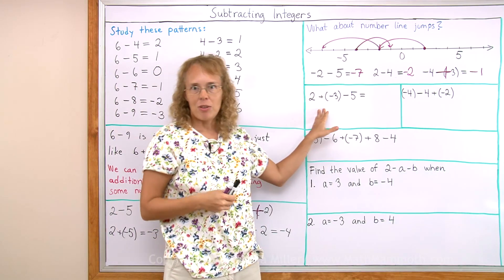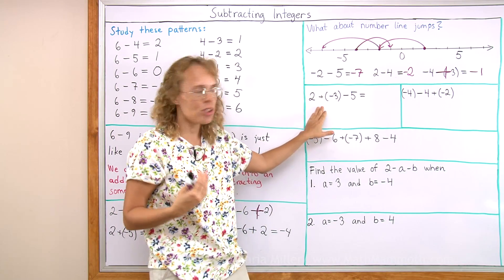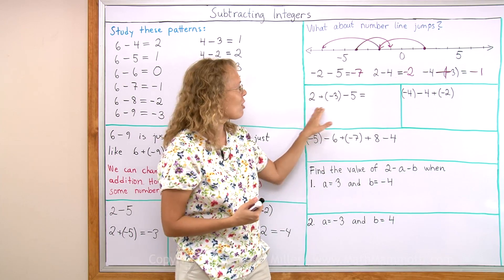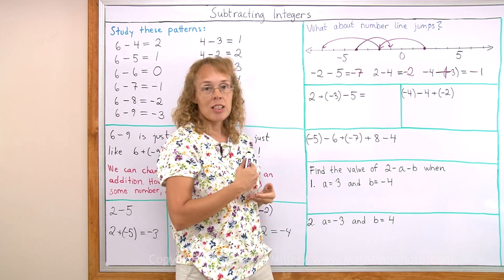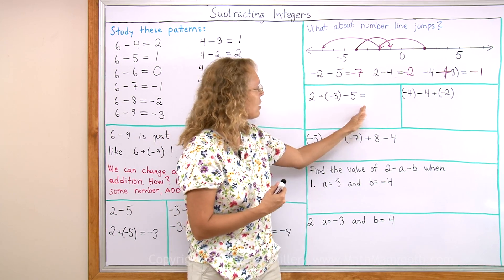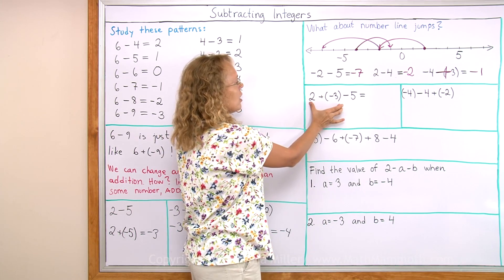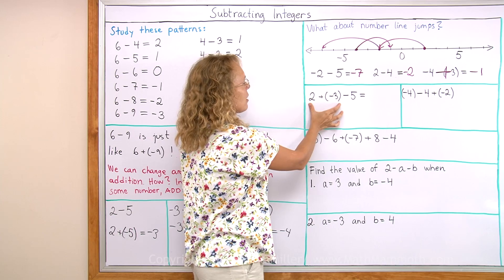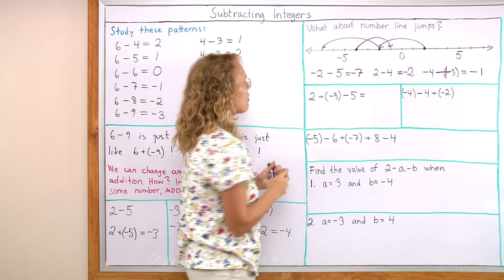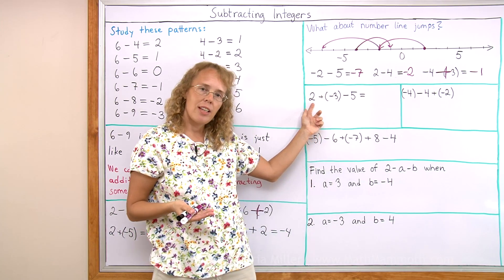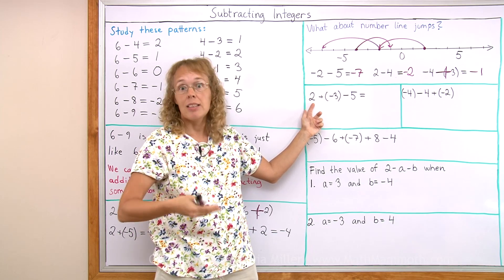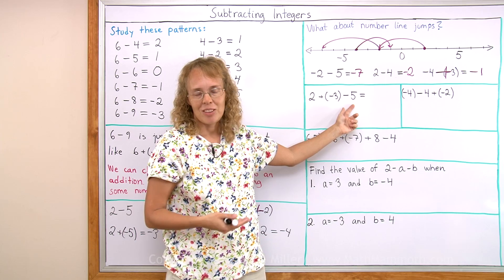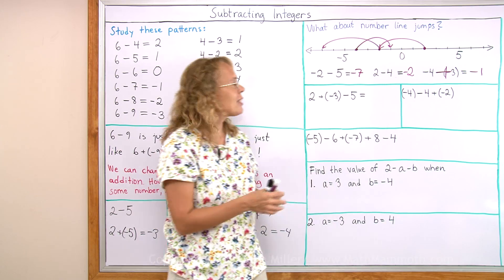Now what about if you have many numbers, mixed additions and subtractions? There are several ways you can solve this. One way is just to go step by step from left to right — deal first with 2 plus negative 3, whatever you get from that, and then take that minus 5. For example, 2 plus negative 3 is negative 1. Then negative 1 minus 5 — we go further into the negatives — we get negative 6.